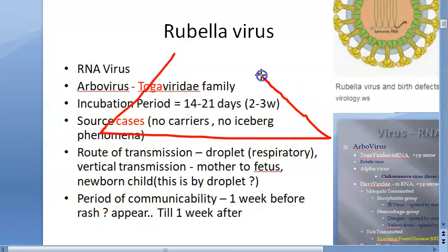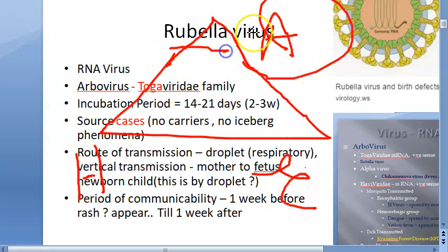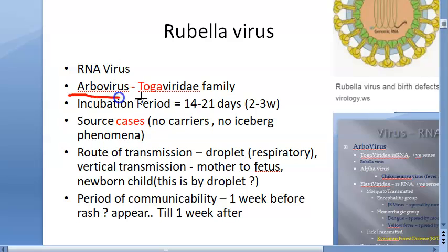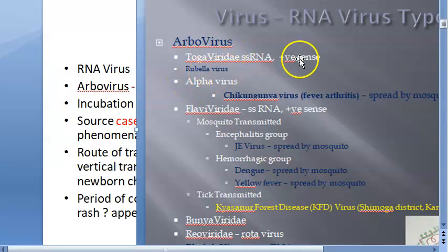In PSM, the epidemiological triad will be asked — agent, host, and environment. The agent is the rubella virus, which falls under arbo virus, Togaviridae family. In virology classification, it is an RNA virus under Togaviridae, and it has positive-sense RNA.